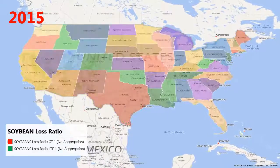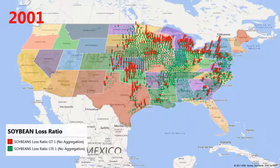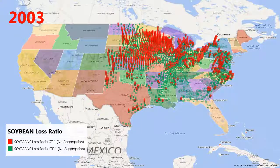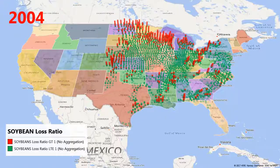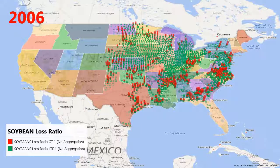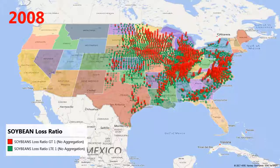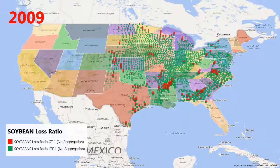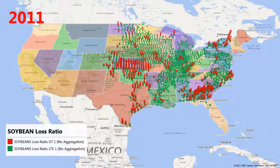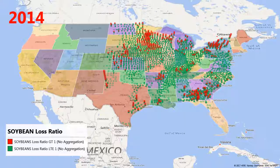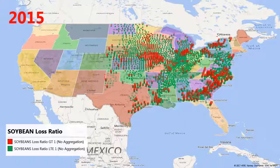In this scene, soybean loss ratios for each county from 2001 to 2015 are shown. The red portion of the column denotes that the loss ratio exceeded one for a given year. Over the 15-year study period, the year with the lowest percentage of counties with loss ratios greater than one was 7% in 2009. In 2003, 41% of all counties with soybean revenue crop insurance had loss ratios that exceeded one.